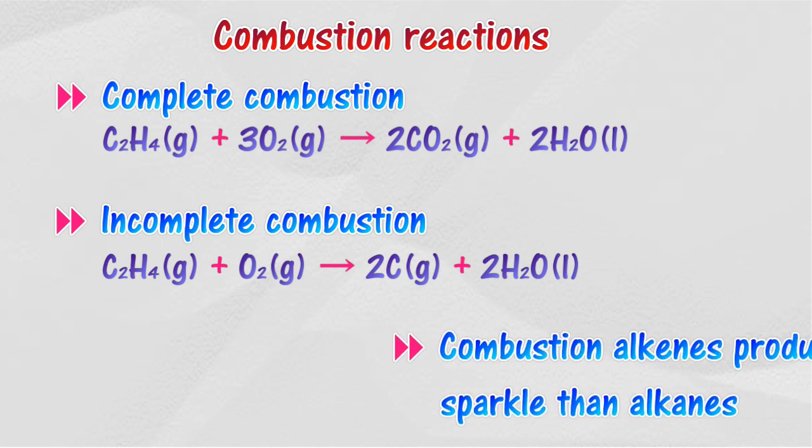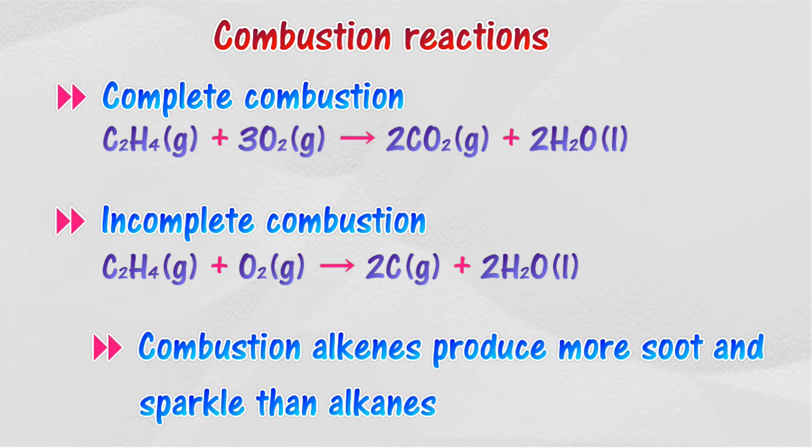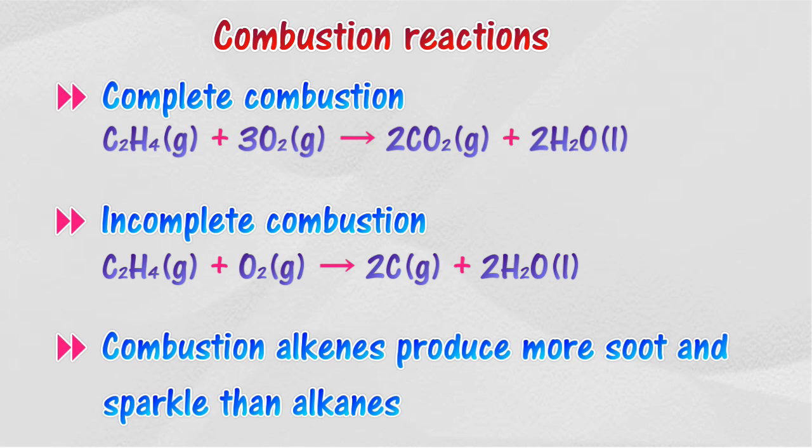Combustion of alkenes produces more soot and sparkle than alkanes. This is because alkenes are unsaturated hydrocarbons, and the percentage of carbon per molecule is higher than in alkanes.